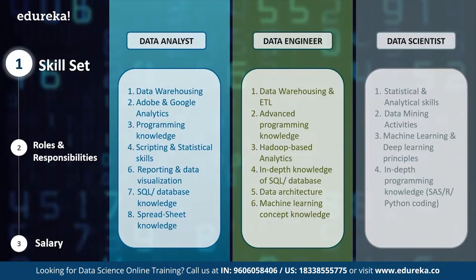A data scientist needs to master both data stats and math, along with in-depth programming knowledge of machine learning and deep learning. The ideal data scientist's job description includes statistical and analytical skills, data mining activities, machine learning and deep learning principles, and various algorithms. A data scientist should also have in-depth programming knowledge in languages such as SAS, R, or Python.